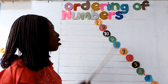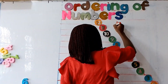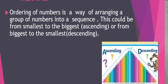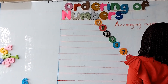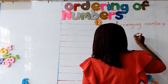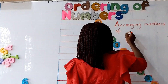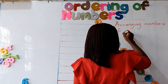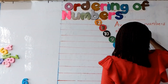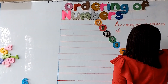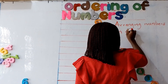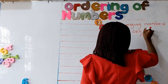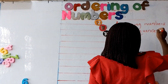Now, ordering all numbers. Ordering all numbers is arranging numbers — arranging a group of numbers in a sequence. That is, arranging numbers in a sequence.